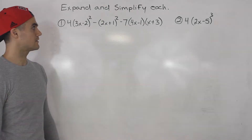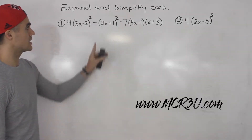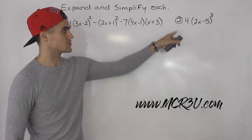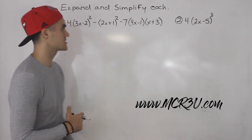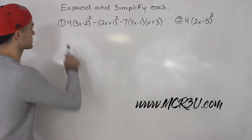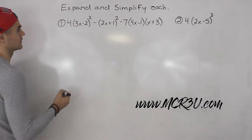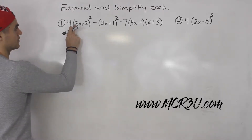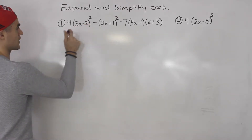What's up everybody? In this video we're going to take both of these expressions, we're going to expand them and then we're going to simplify them. Starting off with number one, we got 4 bracket 3x minus 2 squared.